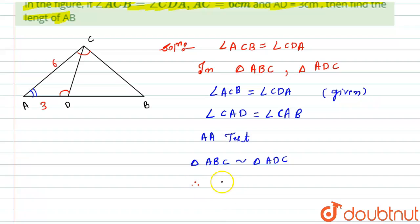Here this is AC divided by AD equals AB divided by AC. Now I will simply put the values over here and calculate the value or length of AB.